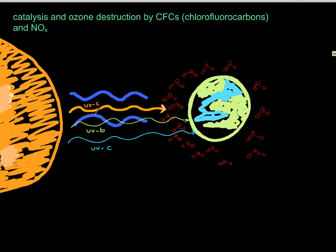Now what happens is destruction of ozone can also be catalyzed by compounds known as chlorofluorocarbons and nitrogen oxides. The most famous or infamous chlorofluorocarbon is R12 or chlorofluoro 12, which is a carbon with four attachments. It has two chlorines and two fluorines.